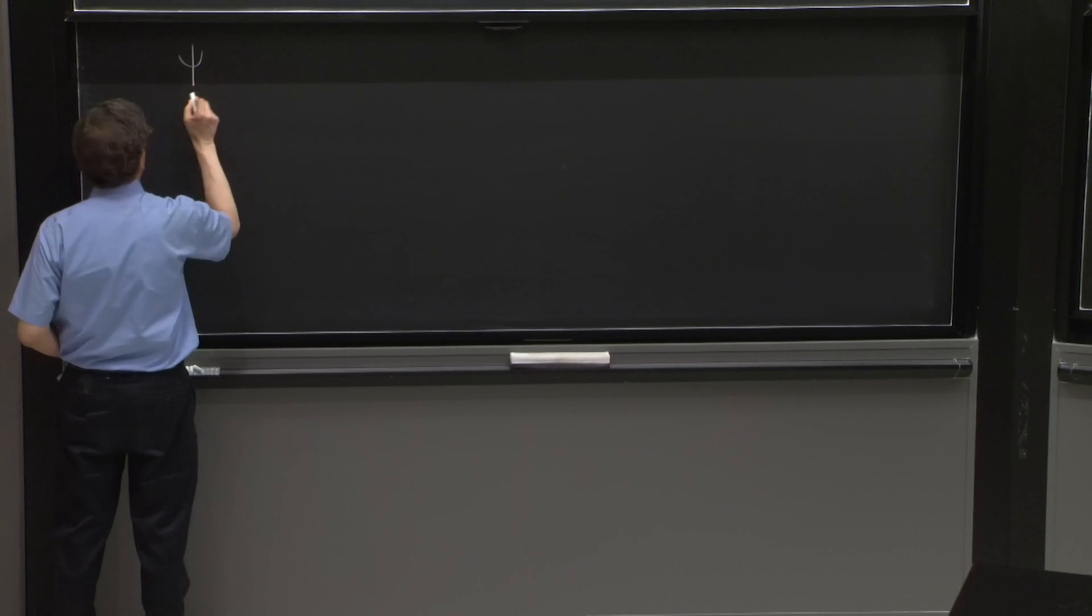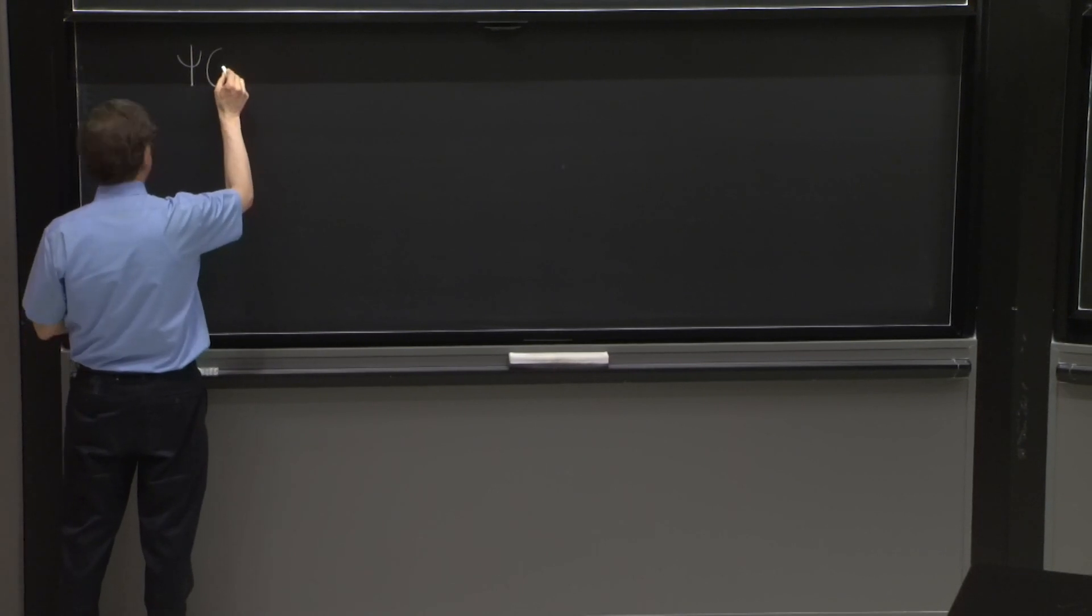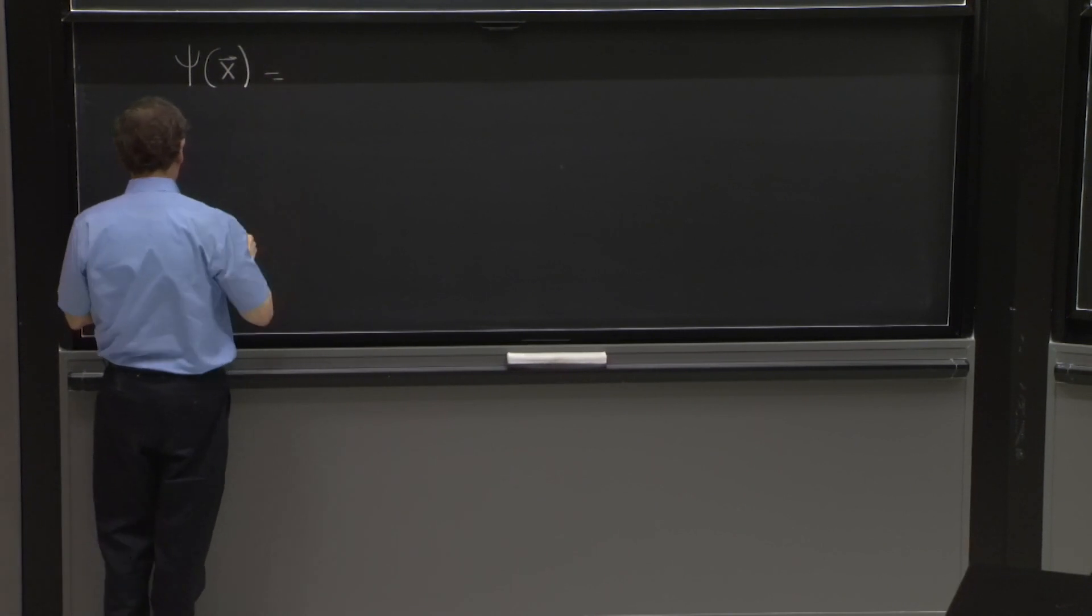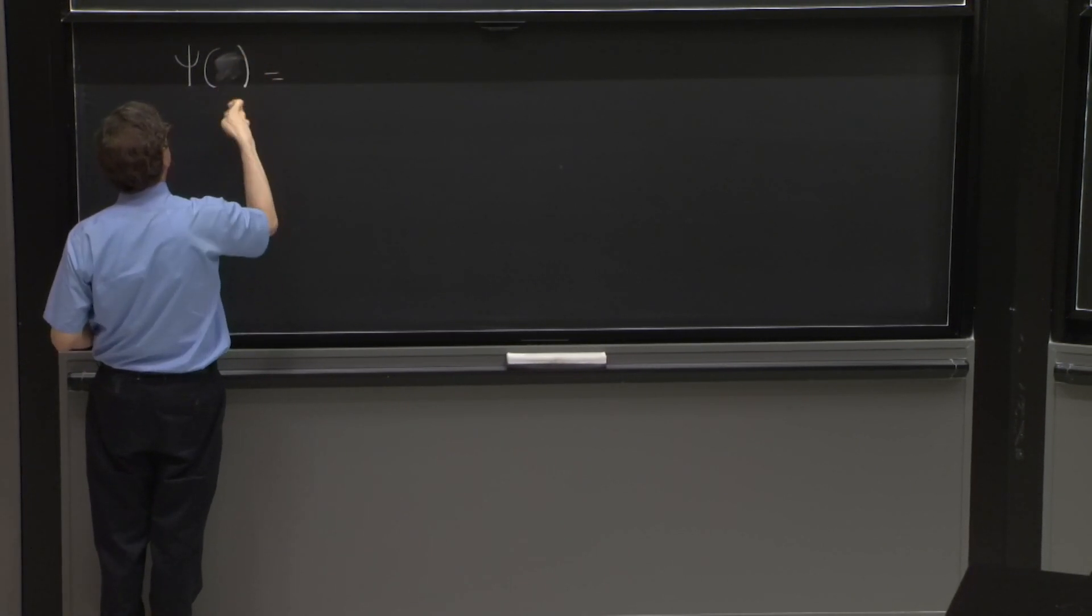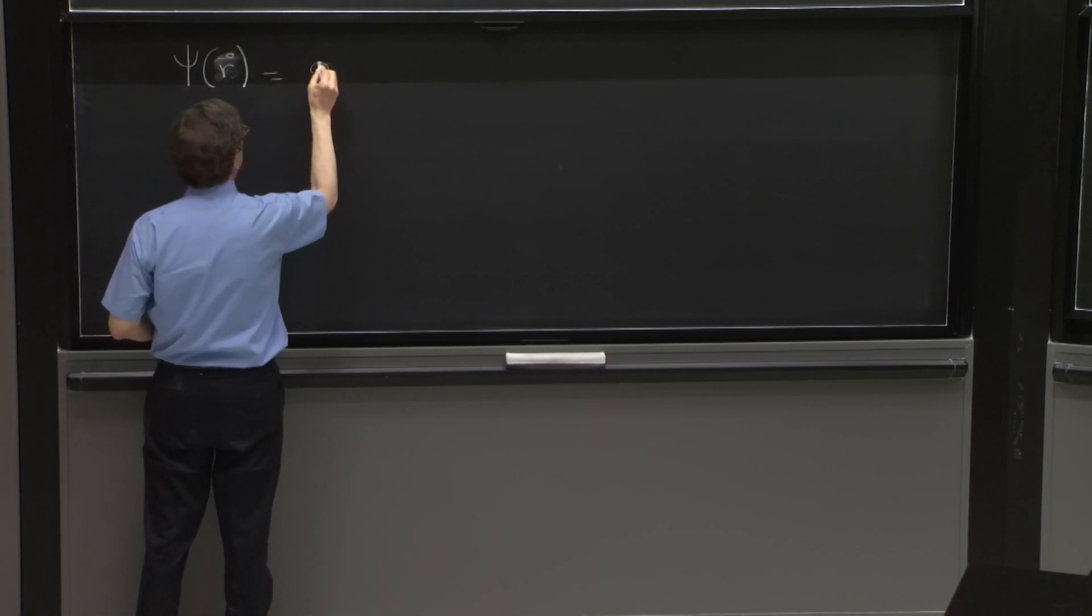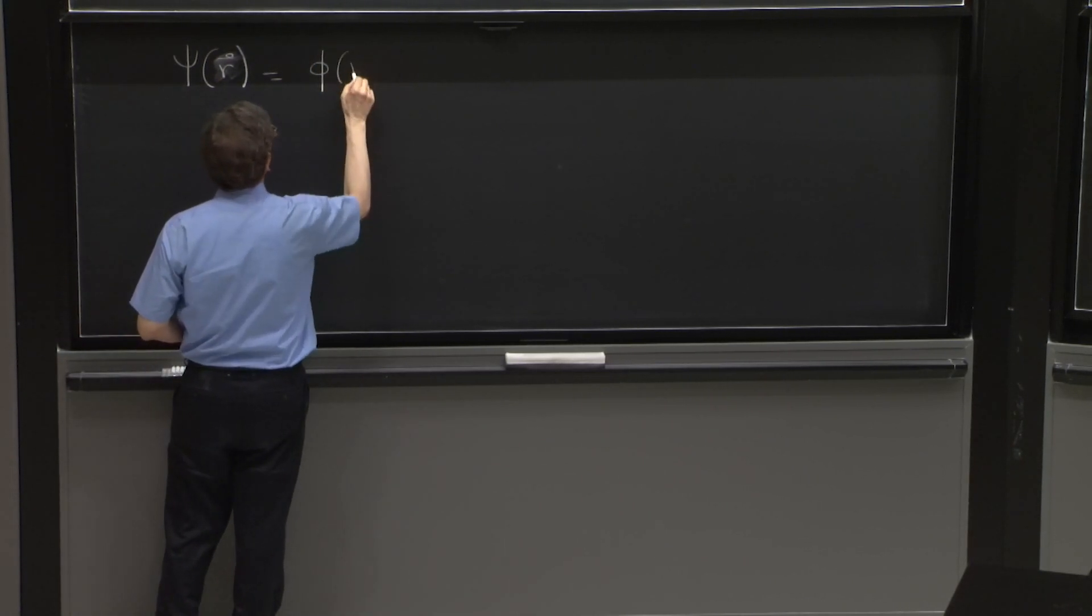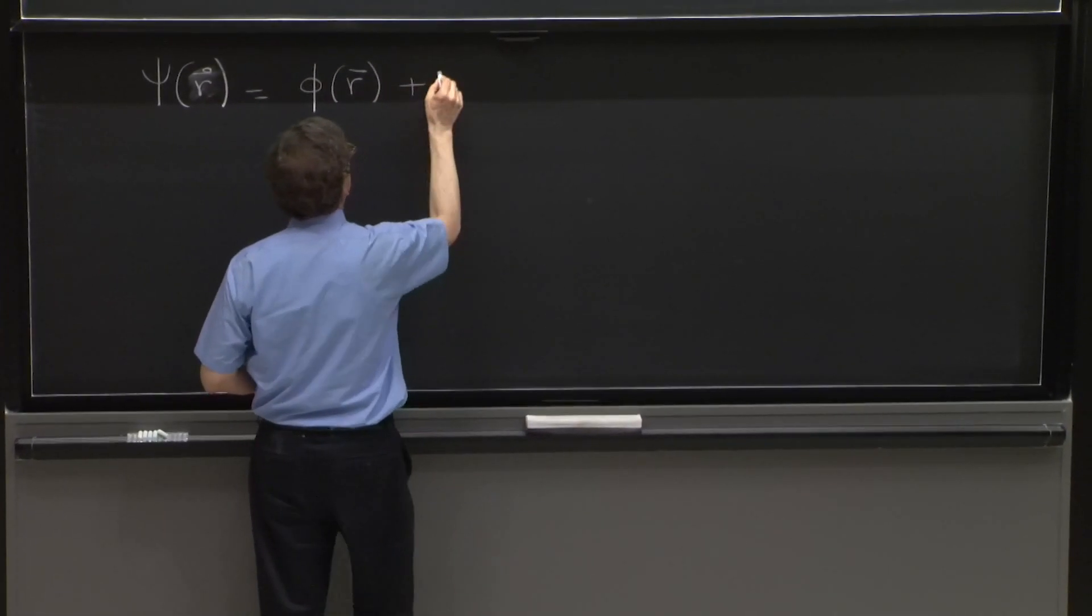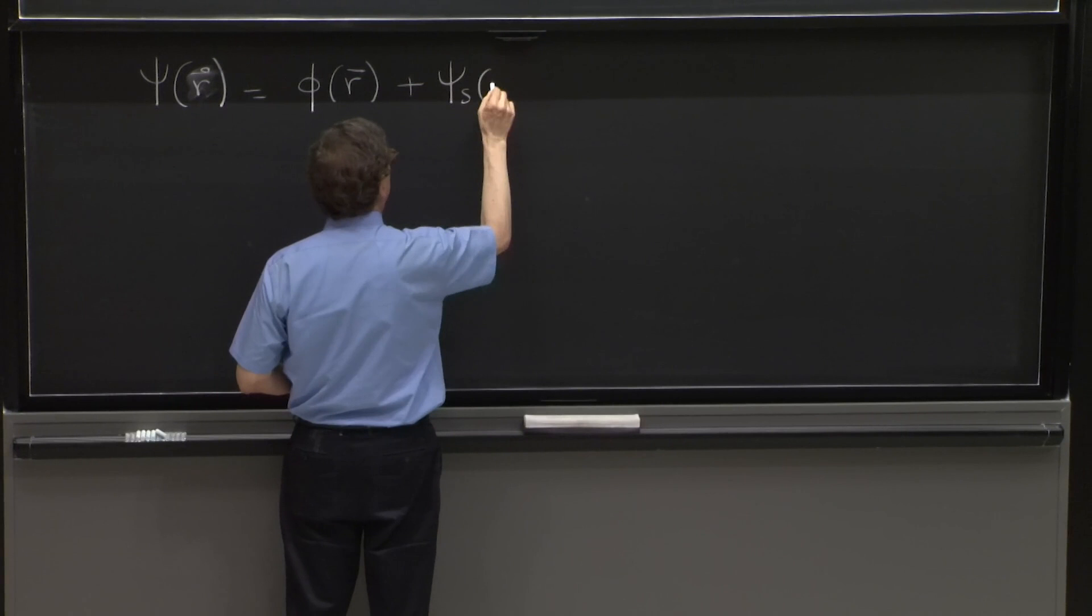We wrote the solution, a scattering solution Ψ(r). And this solution had a wave that represented the incoming wave, and it had what we call the scattered wave.